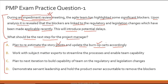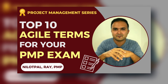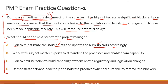Option A: plan to re-estimate the story points and update the burn-up charts accordingly. There's a lot of technical jargon here — story points, burn-up charts — so it's important to focus on these agile terms and concepts. If you re-estimate story points accounting for delays — say a story point that was three weeks now takes five weeks — and update your burn-up charts, what good will it do?